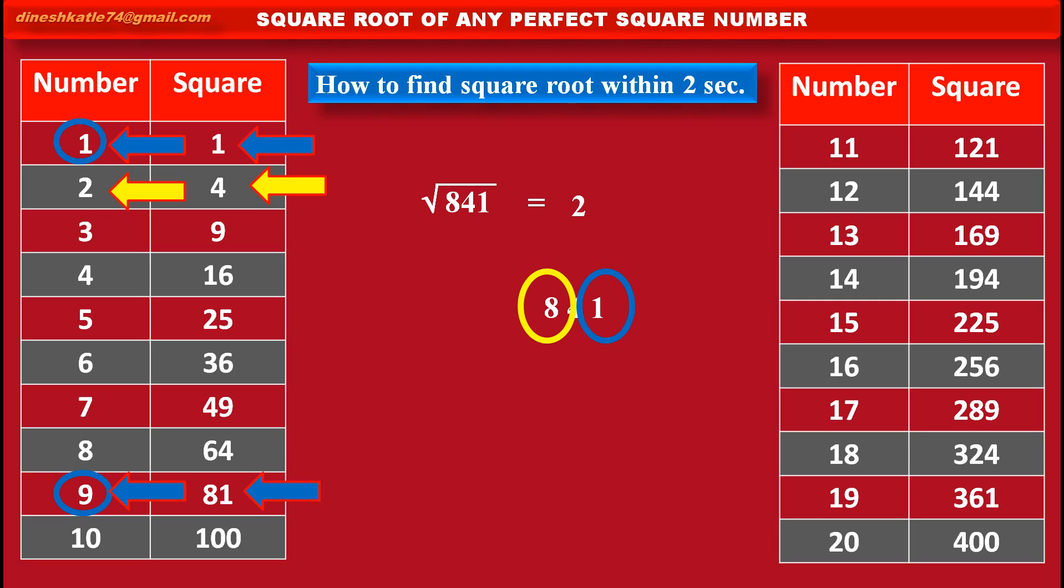It depends on the product of two numbers. First number is our selected first digit of the answer, that is 2, into next natural number of 2, that is 3. This product is 6, which is less than the first digit of the given number, that is 8.